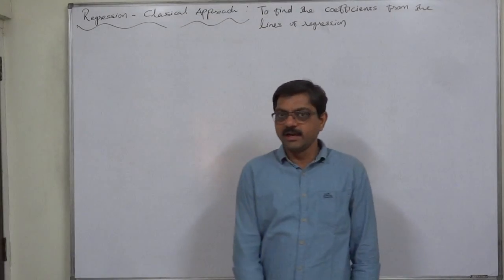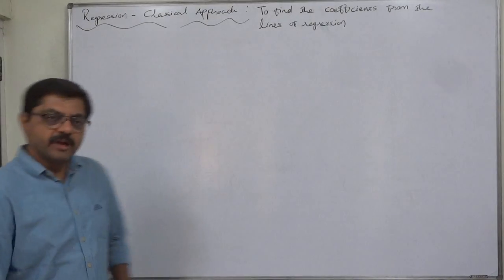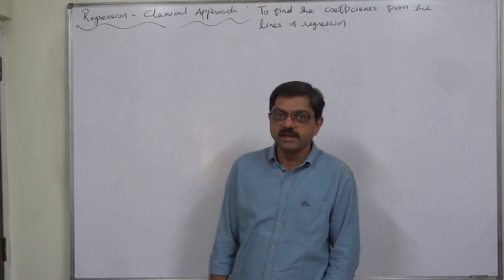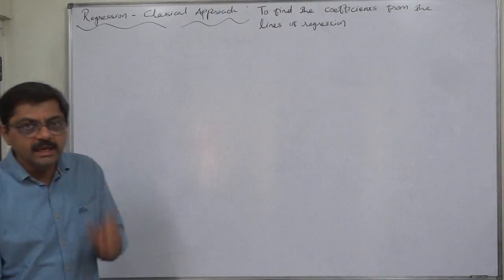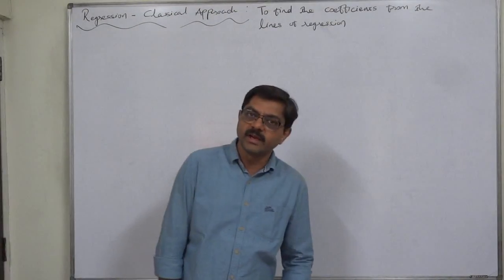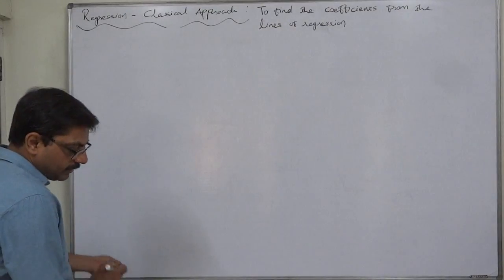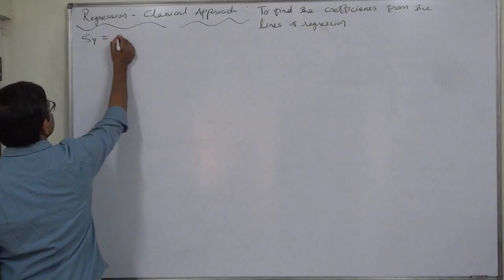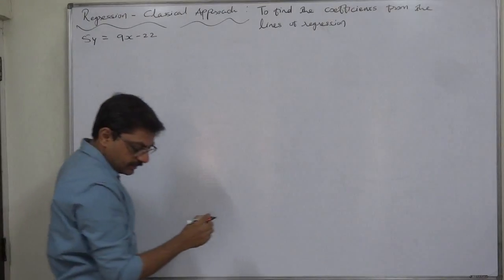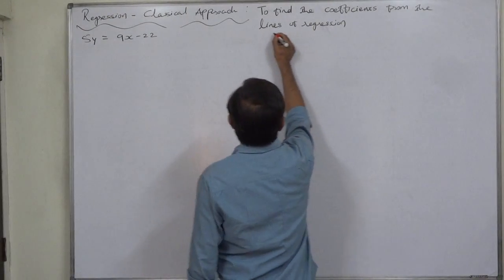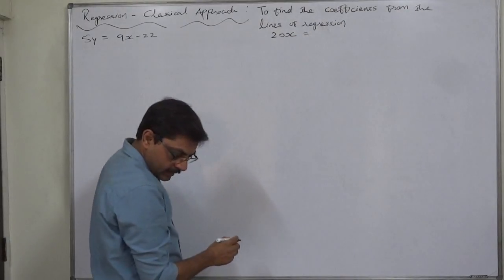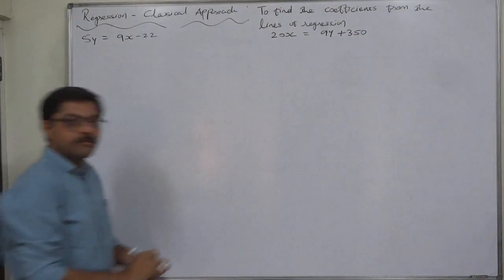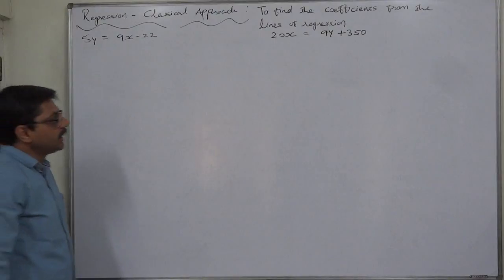Namaskar. In regression, or linear regression — classical approach — this time we are going to learn how to find out the coefficients of regression as well as coefficients of correlation when we have the equations of the two lines of regression available. The two equations available are: 5y = 9x − 22, and the second equation is 20x = 9y + 350.